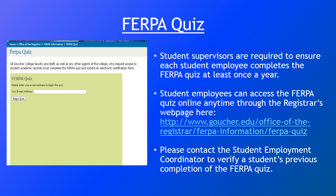One of the key components of the payroll authorization form is that all student employees must complete the FERPA quiz annually. At least once a year, your students are required to complete this quiz, which can be accessed on the registrar's website. If you hire a student midway through the year and think they may have already completed it, you can contact the student employment coordinator to verify whether or not they have completed the quiz — we do have access to that information.